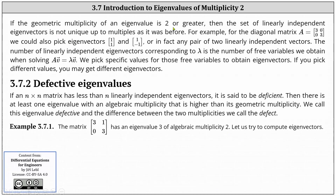If the geometric multiplicity of an eigenvalue is two or greater, the set of linearly independent eigenvectors is not unique up to multiples as it was before. For example, for the diagonal matrix A with entries 3, 0, 0, 3, we could have also picked eigenvectors (1, 1) and (1, -1), or in fact any two linearly independent vectors. The number of linearly independent eigenvectors corresponding to lambda is the number of free variables when solving A times V equals lambda times V.